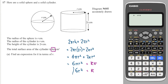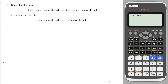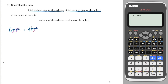Therefore k is equal to 6r², and that is an expression for k in terms of r. Part b says show that the ratio of the total surface area of the cylinder to the total surface area of the sphere is the same as the ratio of the volume of the cylinder to the volume of the sphere. The total surface area of the cylinder is 6πr², and the total surface area of a sphere is 4πr². Dividing both sides by r² and by π gives us 6 to 4, which is the same as 3 to 2.